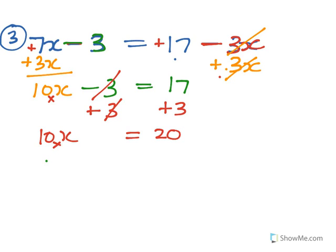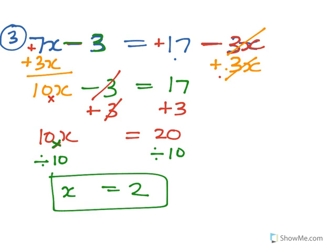Now I have to get rid of the 10. So it's times 10, so you go divide by 10, divide by 10. x equals 20 divided by 10, which is 2.